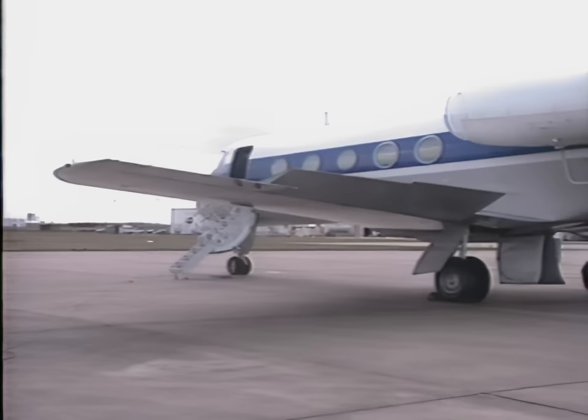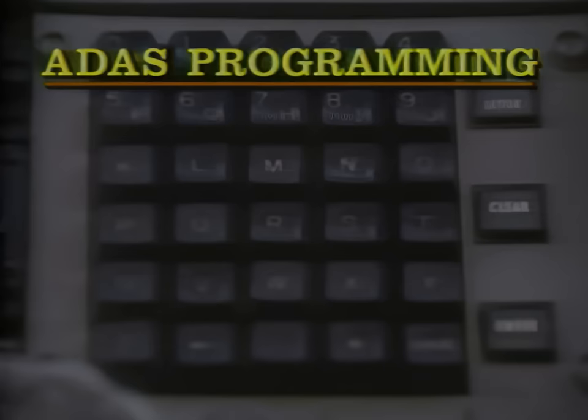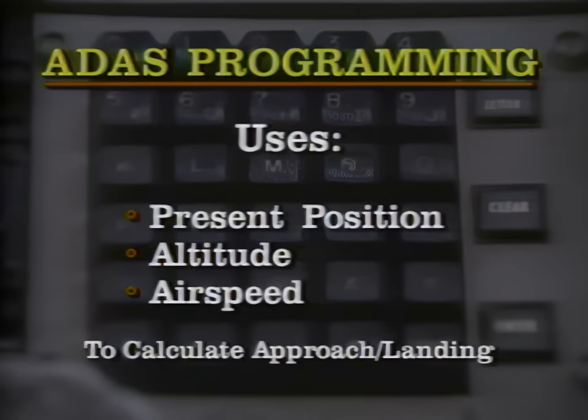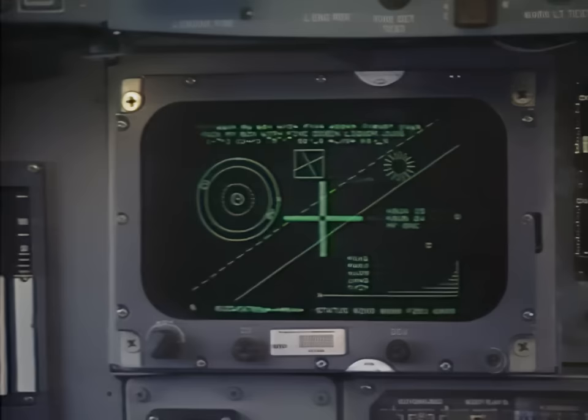If a correction is called for, ADAS makes the adjustment within milliseconds. ADAS is also programmed with information about runway locations. Data such as present position, altitude, and airspeed are continuously updated and used to calculate the approach and landing path to the runway. There is also a multi-functional CRT display system called the MCDS, which displays vertical and horizontal situation data in the same manner it would appear on the orbiter's display monitors.